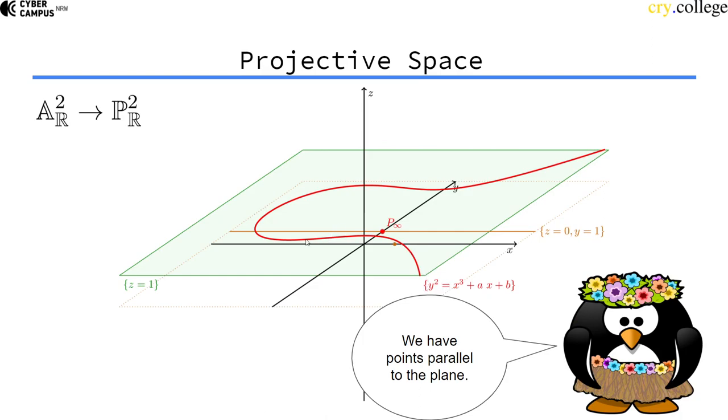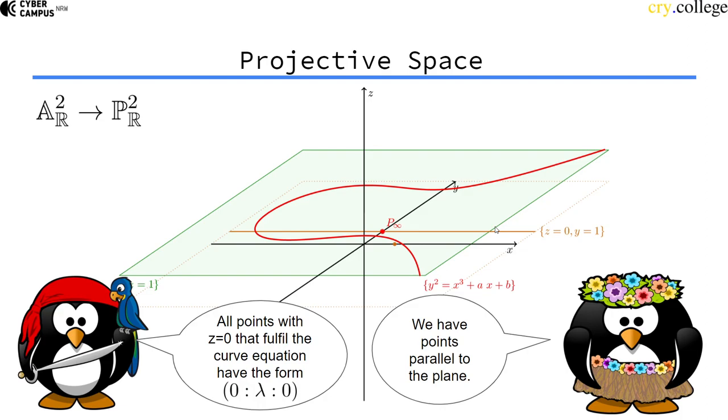So all the points actually also lie in the plane except for a weird bunch of points. So there are points that are parallel on a line that is parallel to the plane. It turns out all points that have z equals zero, so the line is parallel to the plane.